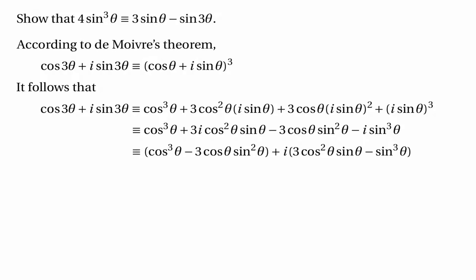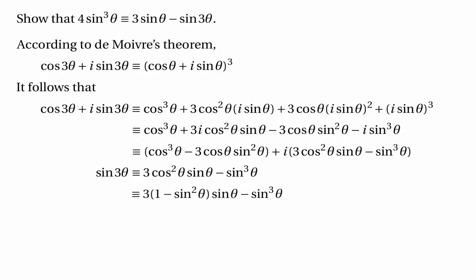Equating the imaginary parts on both sides, we discover that sin 3θ is identically equal to 3 cos²θ sin θ minus sin³θ. We then replace cos²θ with 1 minus sin²θ, giving 3(1 − sin²θ) sin θ minus sin³θ, then multiply out to get 3 sin θ minus 3 sin³θ minus sin³θ, which is 3 sin θ minus 4 sin³θ. This is the required identity.